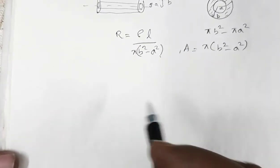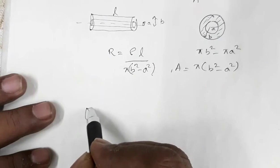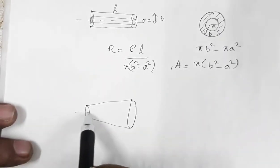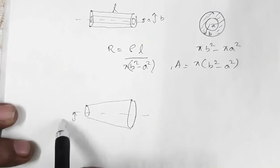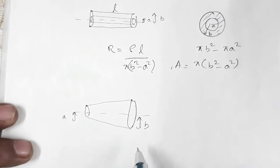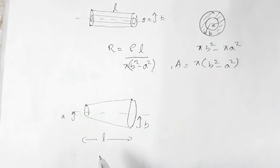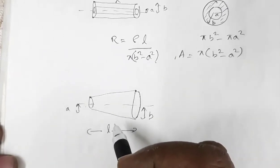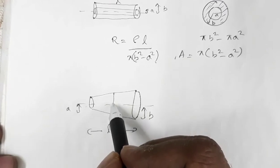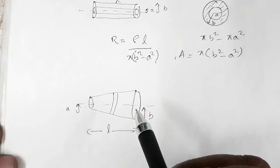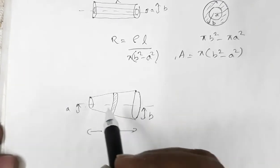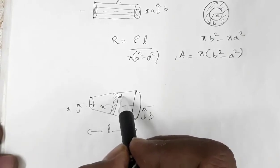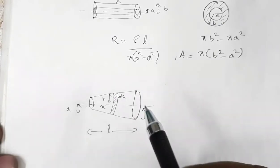Now suppose you have a cylinder such that one side is a solid cylinder where the radius is A on this side and radius is B on the other side, and L is the length. To calculate the resistance of this kind of conductor, let us take one differential element at distance X from one end, where DX is the thickness of this element and R is the radius.